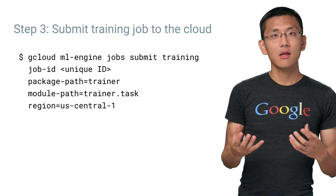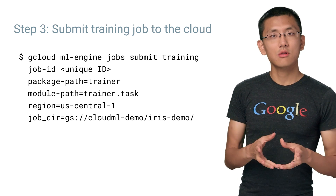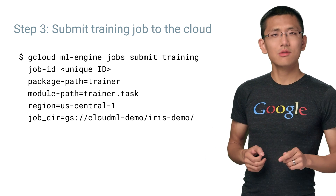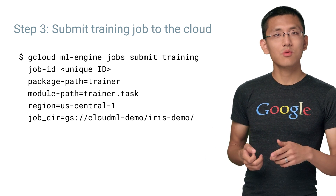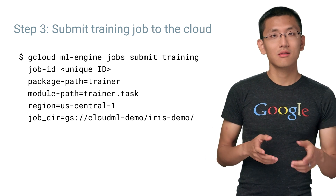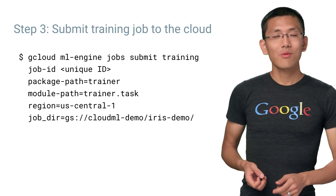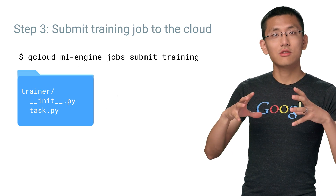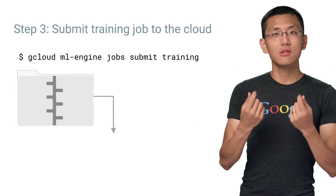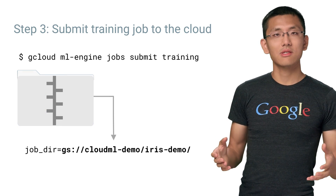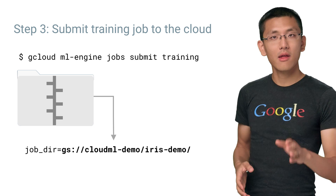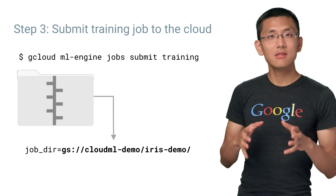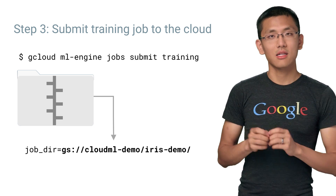We specify the region for your job to run in, and a cloud storage directory to place the outputs of your training. Be sure to use the same region as where your data is stored to get optimal performance. Once you run this command, your Python package is going to get zipped up and uploaded to the directory we just specified. From there, the package will be run in the cloud on the machines we specified in the configuration.